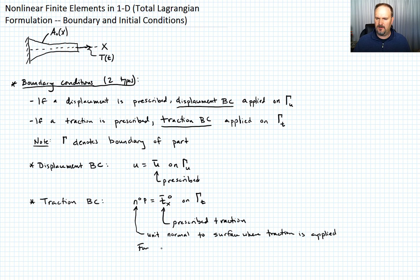For our 1D case, n_naught equals 1 at xb (the right end) if the surface direction is positive, and n_naught equals -1 at xa (the left end) if it's negative.